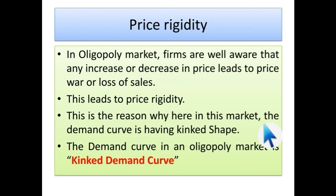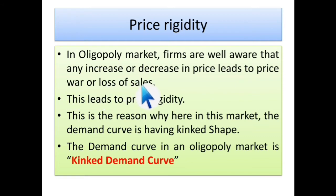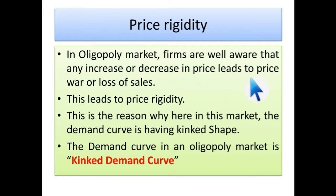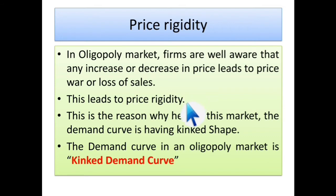So first of all, what is price rigidity? In an oligopoly market, firms are well aware that any increase or decrease in price will lead to a price war or loss of sales. This leads to price rigidity — that means we have to fix on one price. Whether we increase or decrease the price, we face either a price war or loss of sales. In both cases there is a negative impact, so better to remain at one price. That is why the term price rigidity.